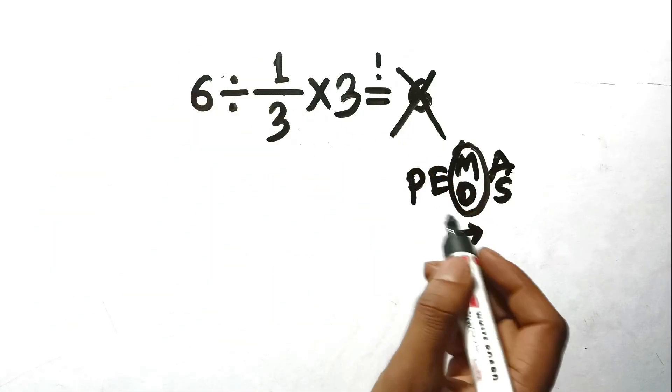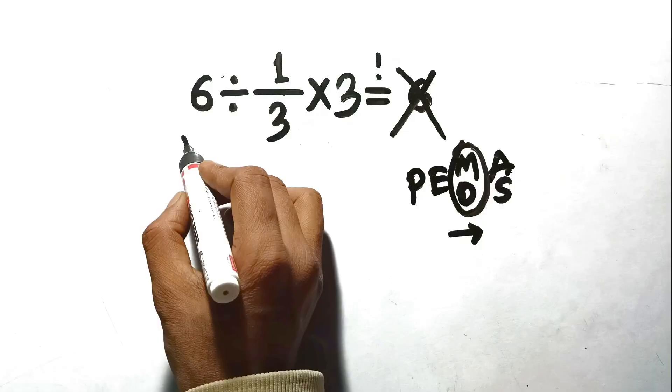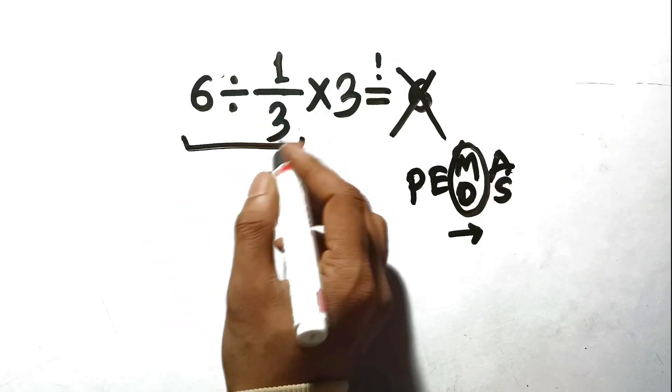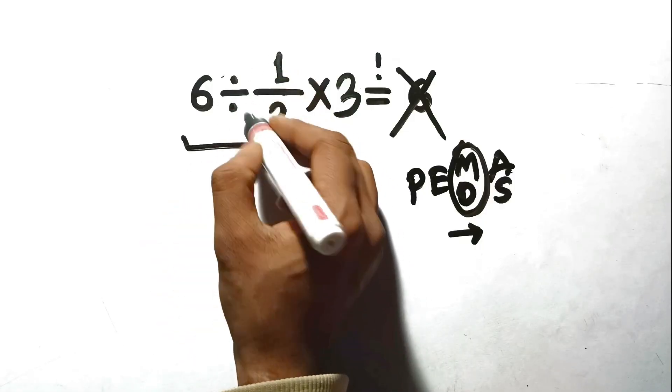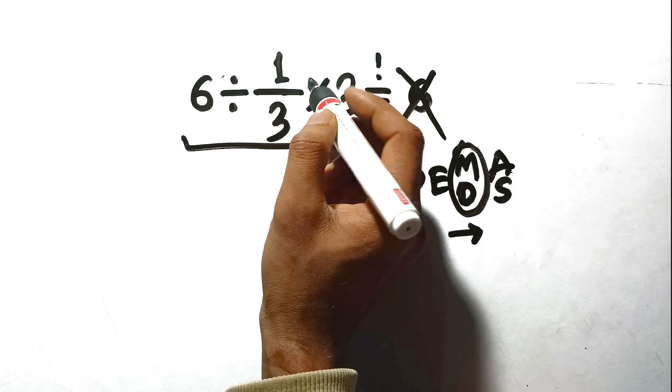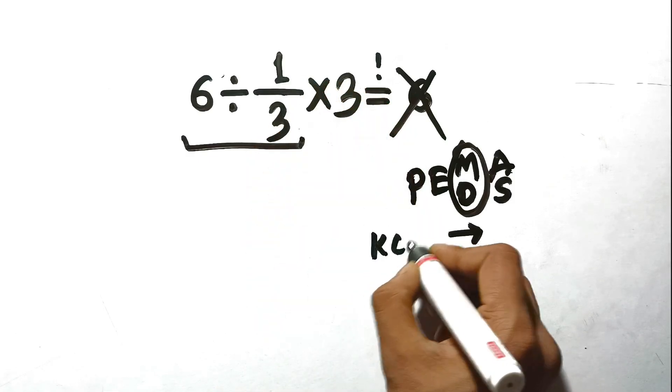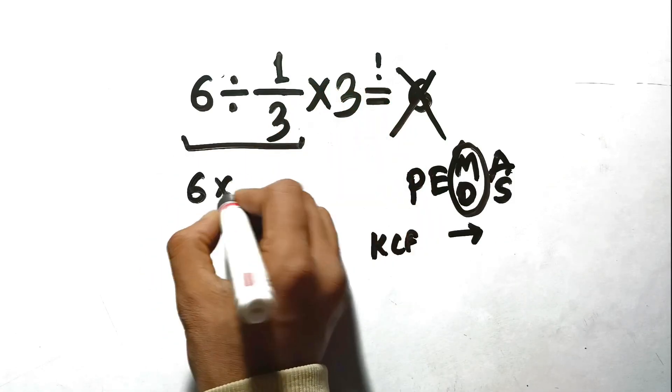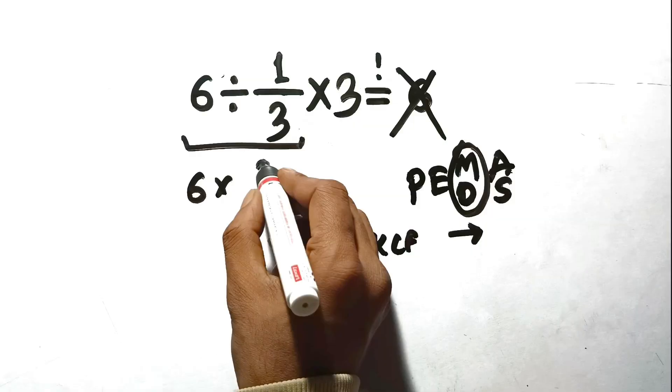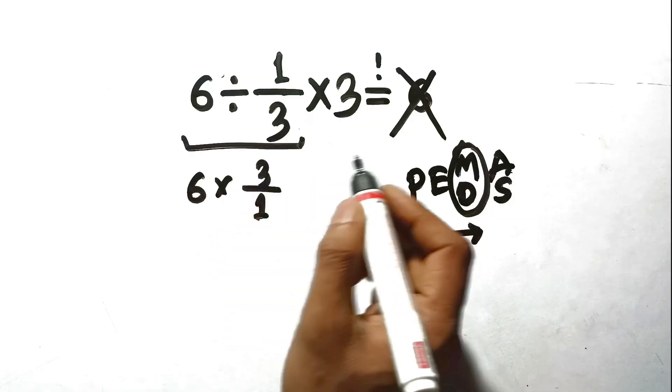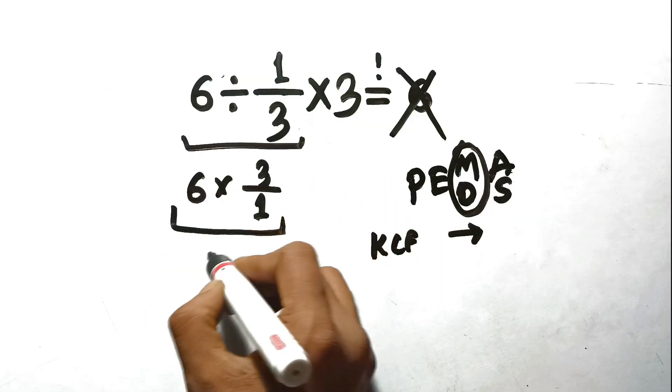So let's slow down and do it properly. Start with the first part, which is 6 divided by 1 third. Remember the golden rule for dividing by fractions. We keep the 6, change the division to multiplication, and flip the 1 third to 3 over 1, or just 3. So now we have 6 times 3, which is 18.